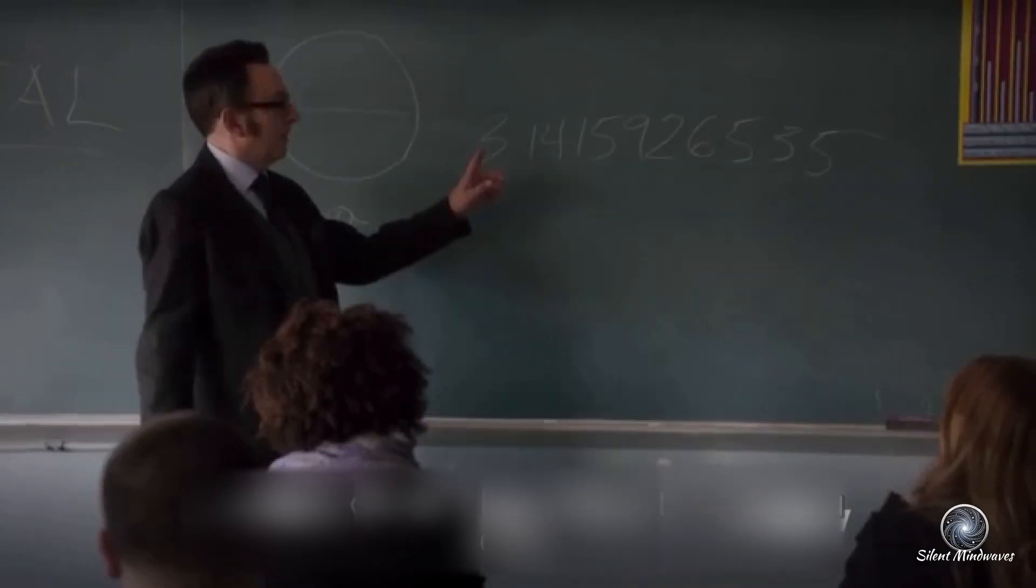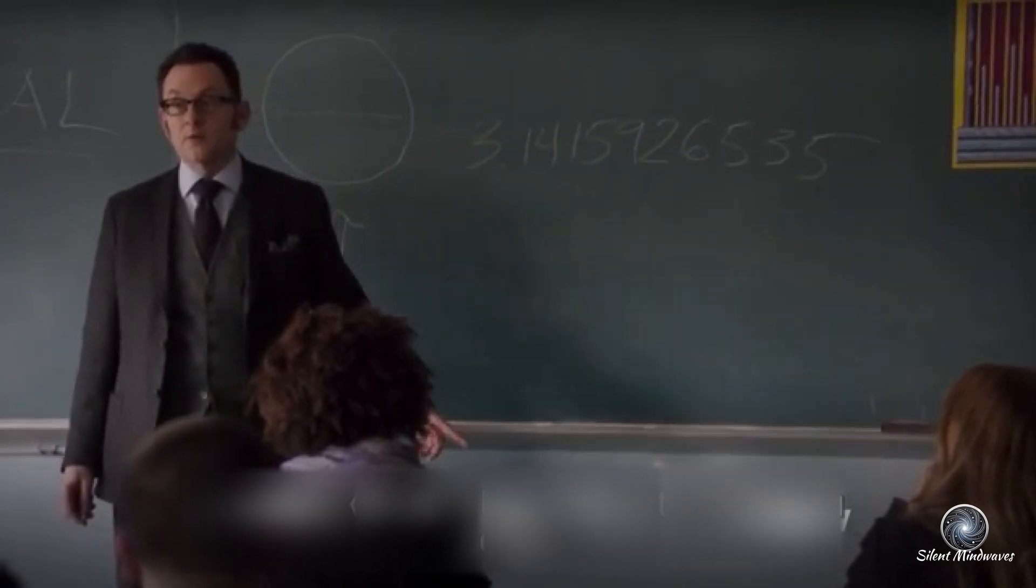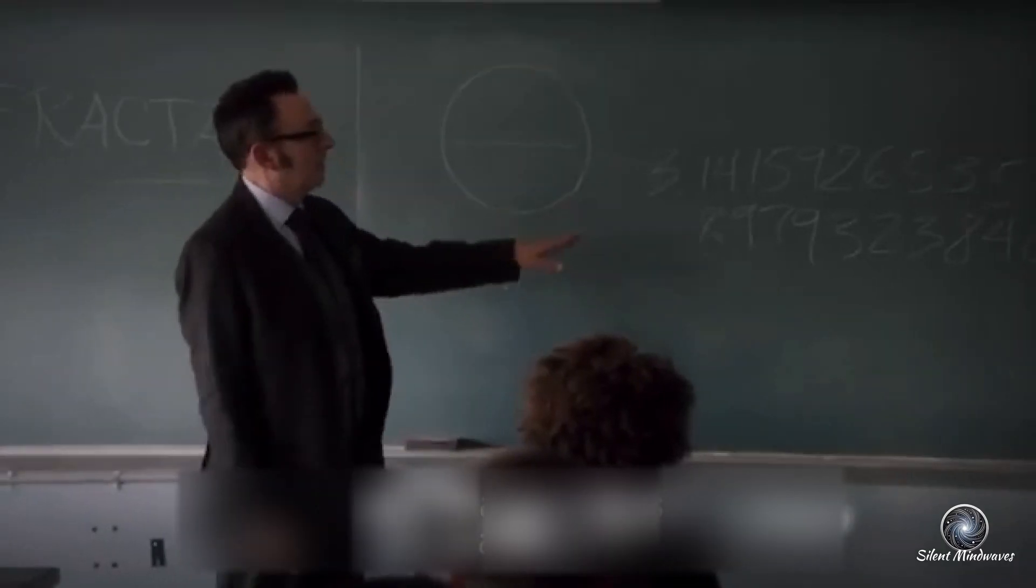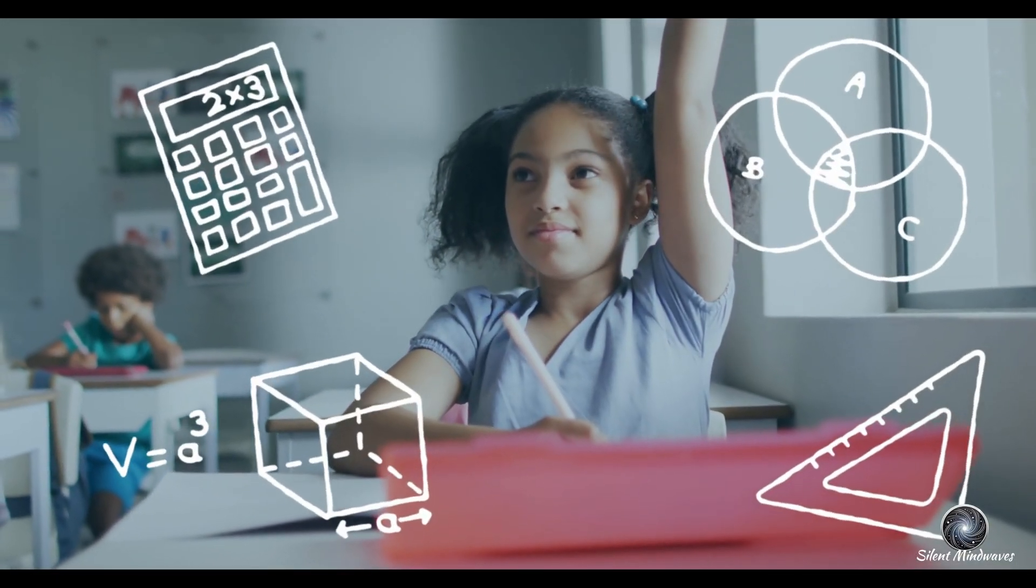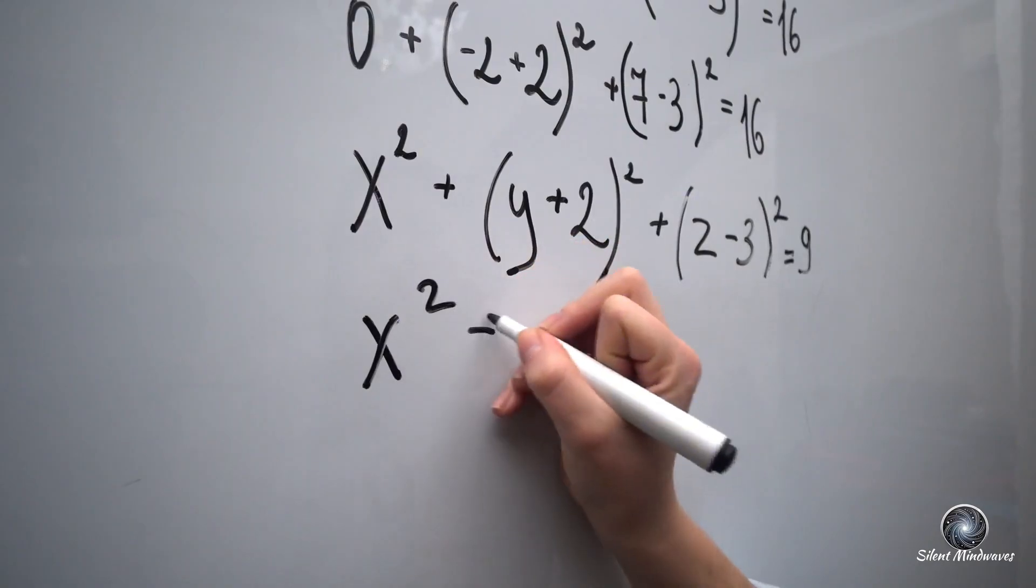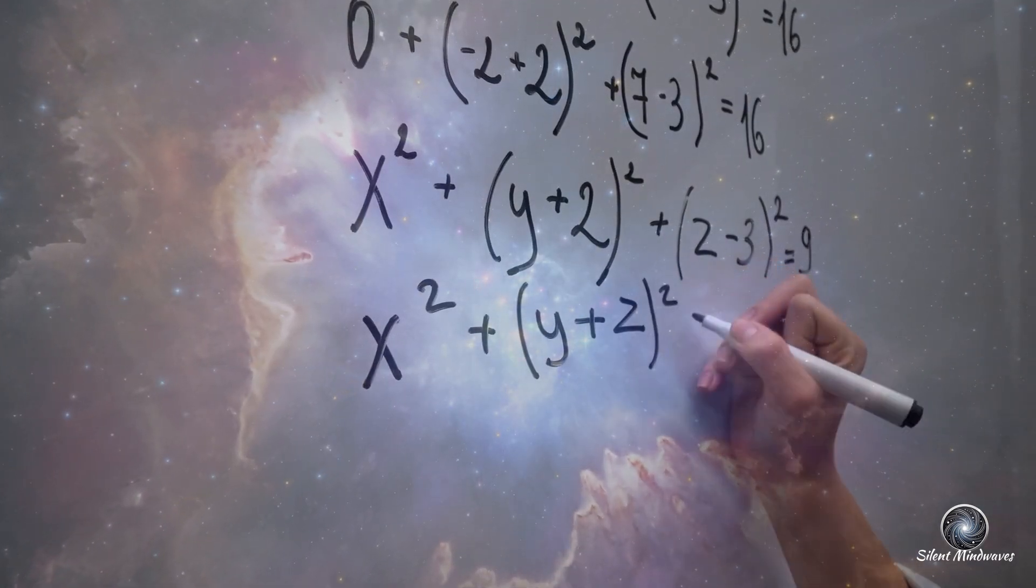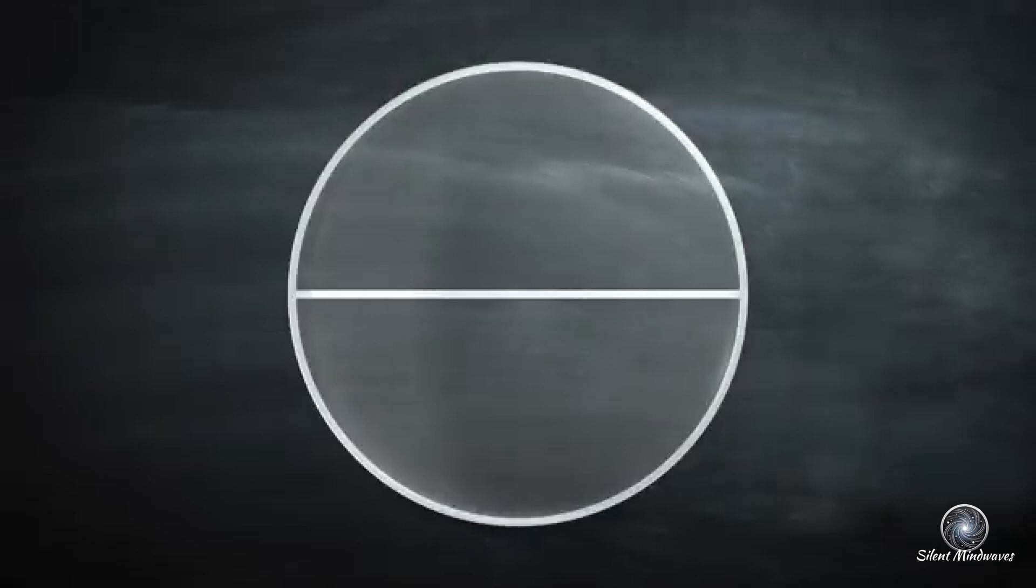Which means that contained within this string of decimals is every single other number. Your birth date, combination to your locker, your social security number, it's all in there somewhere. Now, let's talk about how knowing just the first 152 digits of pi is not only enough, but more than sufficient for solving almost any problem, even on a universal scale.